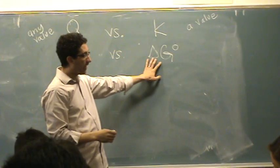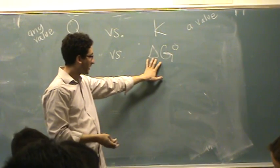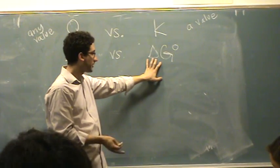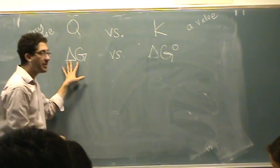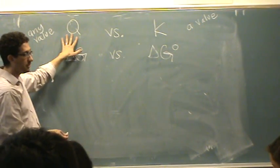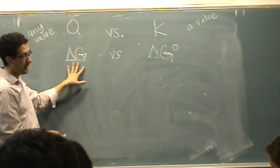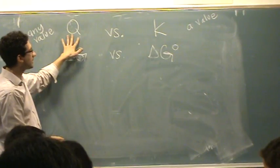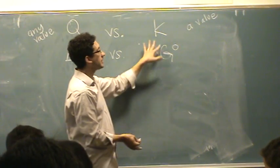This is a value for any reaction. A value, and that value is not going to change as long as the reaction doesn't change. But Delta G can change analogous to Q. This can be any value for a given reaction based on initial conditions. So this one's like Q. The standard one's like K.